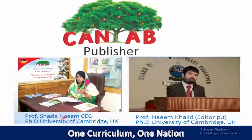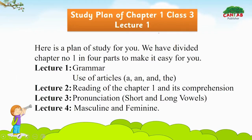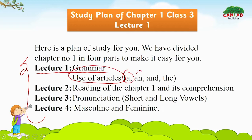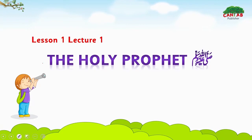Bismillahirrahmanirrahim, welcome to the video session of Cantab Publisher. You should have the textbook of Cambridge Scholar Series of English 3. Here is a plan of study — we have divided Chapter 1 into four lectures. The first lecture covers the grammar portion and we will study the use of articles: a, an, and the. Our lesson name is 'The Holy Prophet (SAW).'